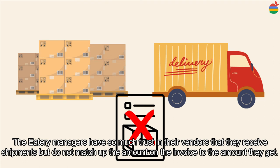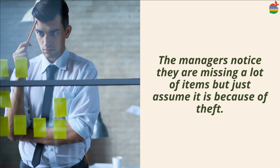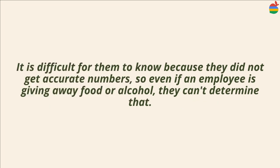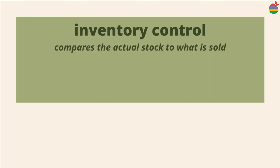The local restaurant manager has so much trust in their vendor that they receive shipments but do not match up the amount on the invoice to the amount they get. The manager notices they are missing a lot of items but just assumes it is because of theft. It is difficult for them to know the true cause because they did not get accurate numbers — so even if an employee is giving away food or alcohol, they cannot determine the root cost.